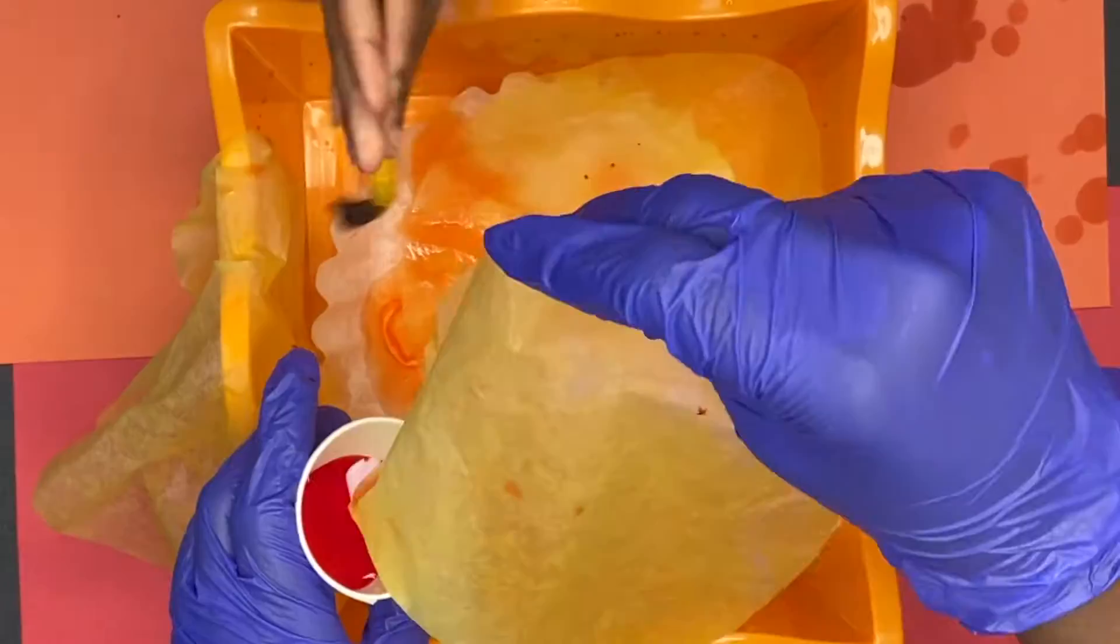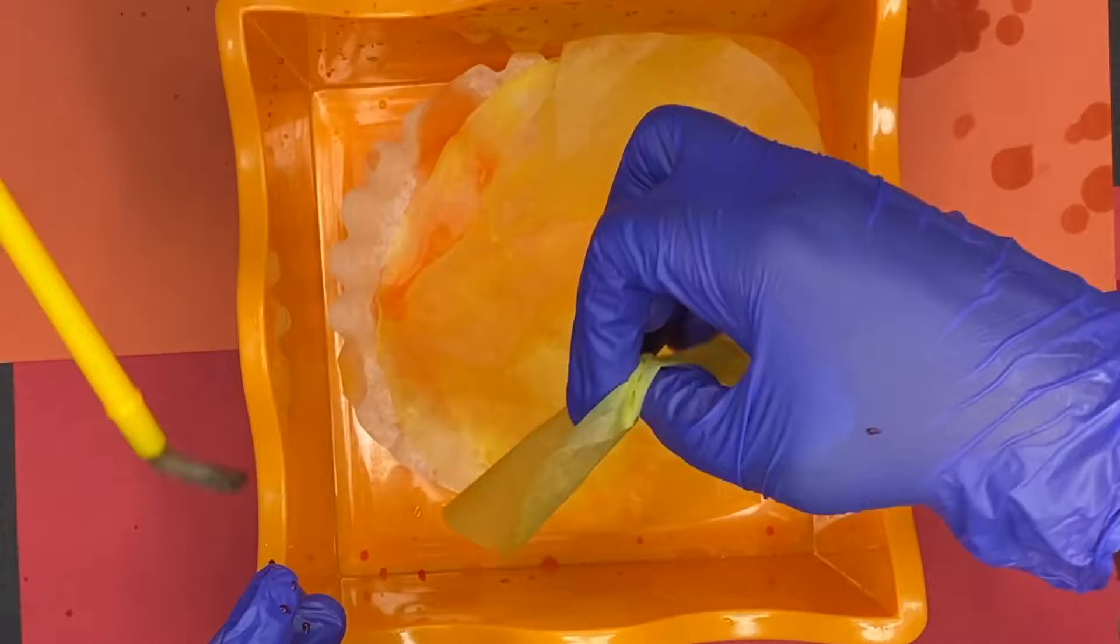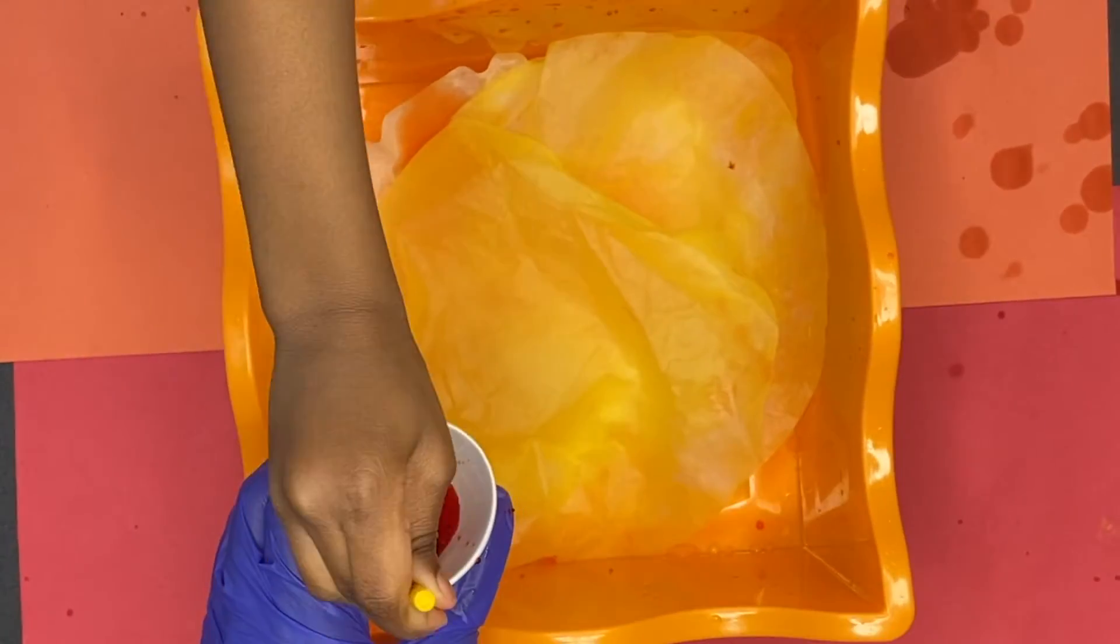Stir that up real good and then put the filters back in the box or whatever you're using, pan. And then just drop some red on top and it'll give you a nice tie-dye effect.